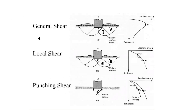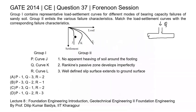Coming to the question: Curve J shows punching shear failure, in which there is no apparent heaving of soil around the footing, so Curve J corresponds to 1. Curve K shows general shear failure, in which we get a peak representing ultimate bearing capacity and settlement increases without load - a well-defined slip surface extends to the ground surface, so Curve K corresponds to 3. Curve L shows local shear failure, where Rankine's passive zone develops imperfectly, so Curve L corresponds to 2.